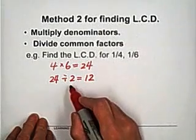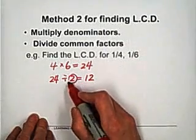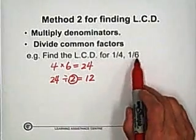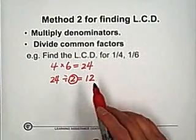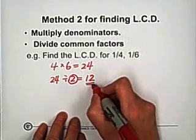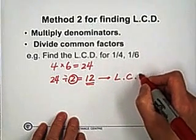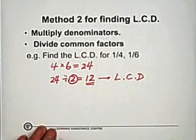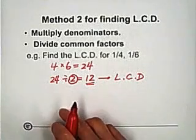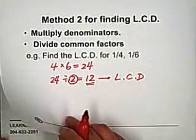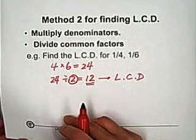Because 2 is the only common factor with 4 and 6, this one, 12, is the LCD. Next example.